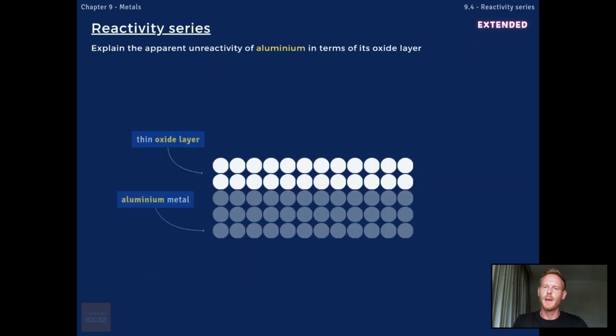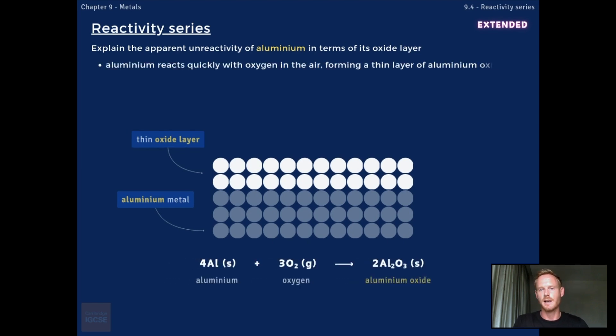Finally, you need to explain the apparent unreactivity of aluminium in terms of its oxide layer. So aluminium appears to be far less reactive than its position in the reactivity series suggests. This is because aluminium reacts quickly with oxygen when exposed to air, forming a thin layer of aluminium oxide.